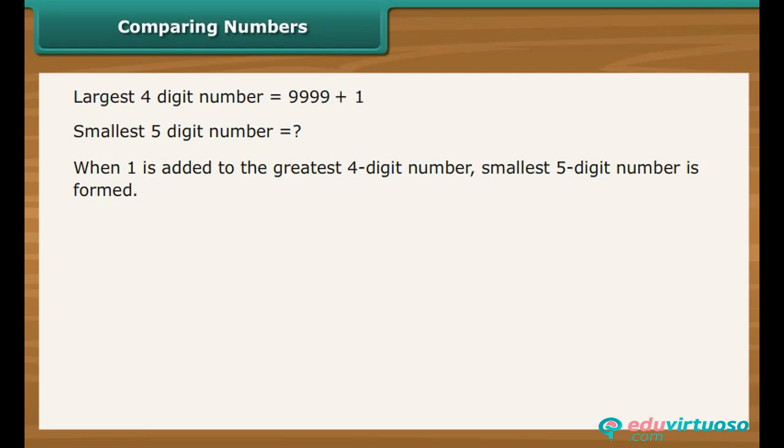On adding 1 to 9,999, we get 10,000, which is the smallest five-digit number.